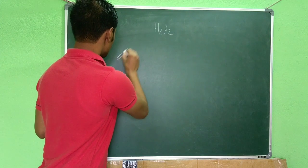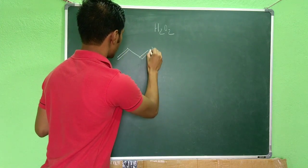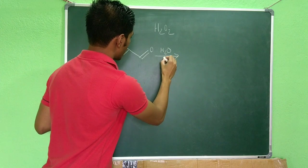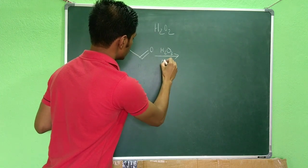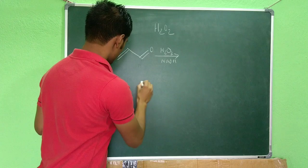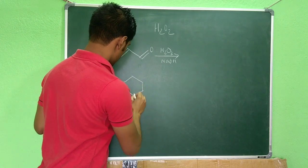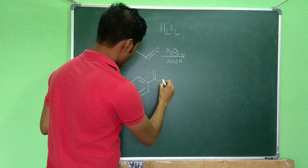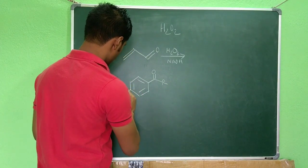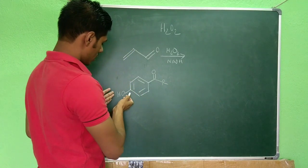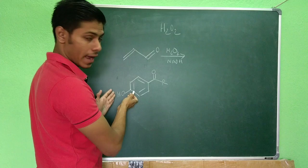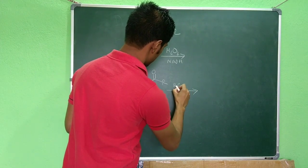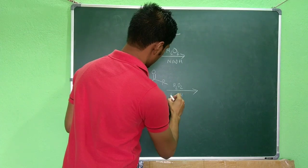The reactions are basically the oxidation of alpha beta unsaturated carbonyl compounds in presence of H2O2 and NaOH, and another is aromatic aldehyde or ketone which will have either the OH group at the para position or at the ortho position and their oxidation with H2O2 and NaOH.